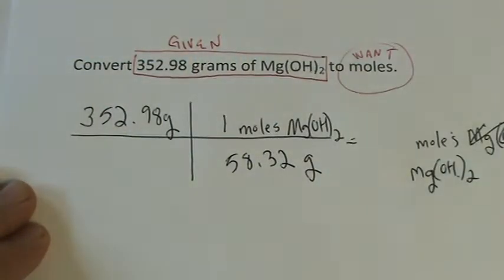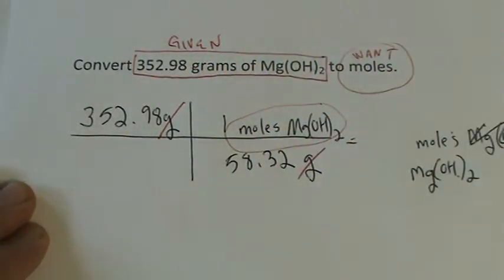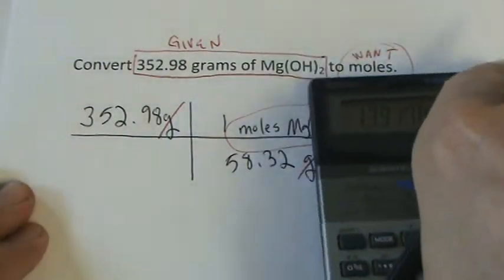Let's cross some stuff out. We can see the grams go away. That leaves moles of Mg(OH)2, and we can do the math now.